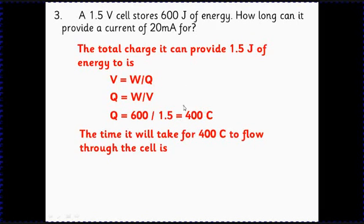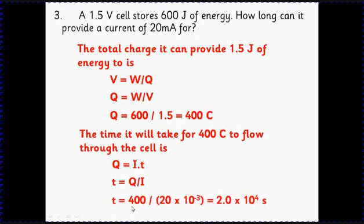How long will 400 coulombs take to flow through the cell if we've got 20 milliamps? We use Q = It, so rearrange that, we get t = Q/I. So Q is the charge, 400 coulombs, and we've got it coming out at 20 milliamps, so we've got 20 × 10^-3 amps. So that will run for 2 × 10^4, that's 20,000 seconds.